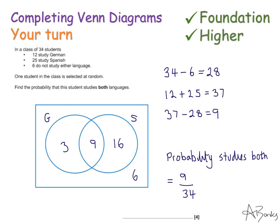Here's a solution. So the first thing I did is put my six in the outside here. Six do not study either language. So there's 34 students in total. Take away these six, that leaves me with 28 students that study German and Spanish. So all of these numbers in here must total to 28. Now my 12 and 25 total to make 37. So the number that must go in the centre, the number that is that overlap, is 37 take away 28. That's 9. So 9 goes in my overlap section.